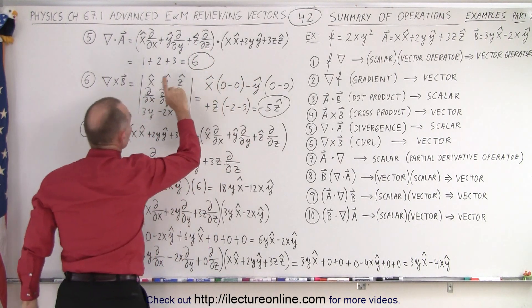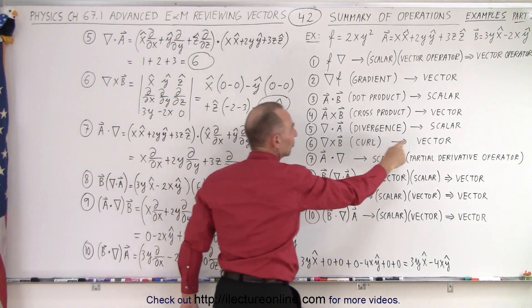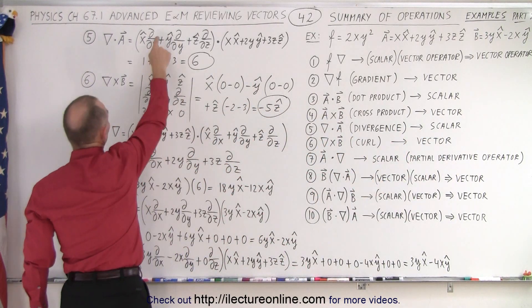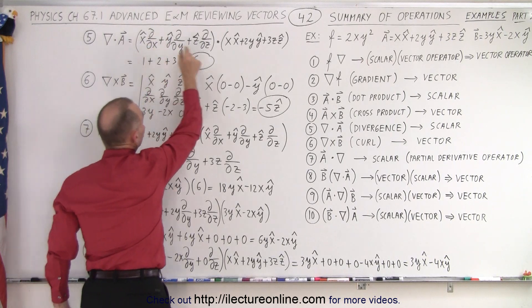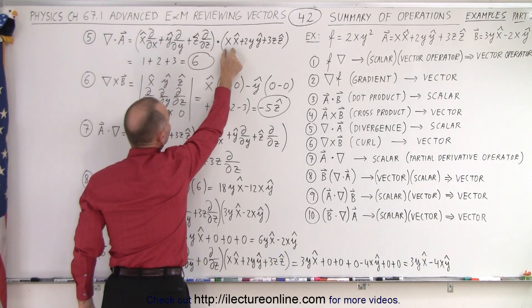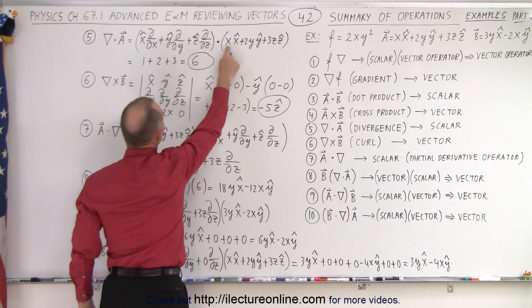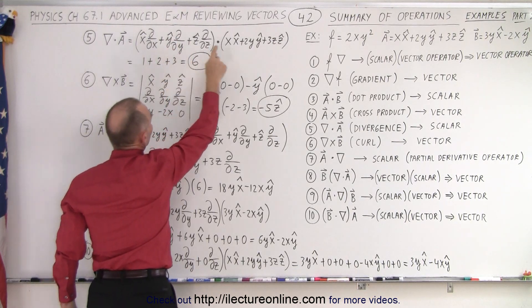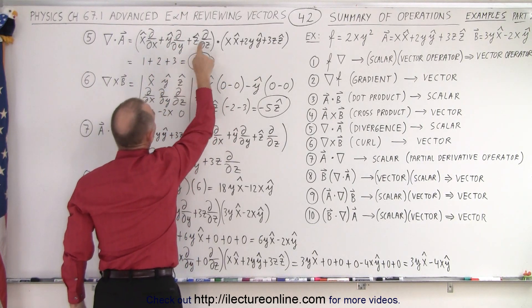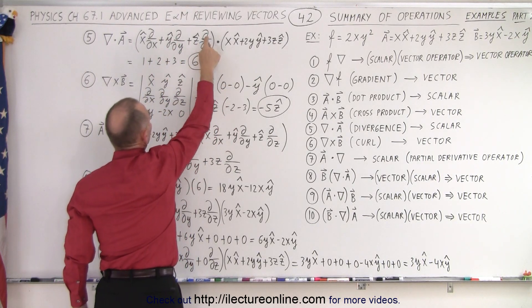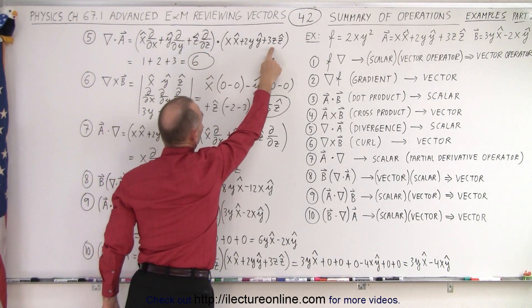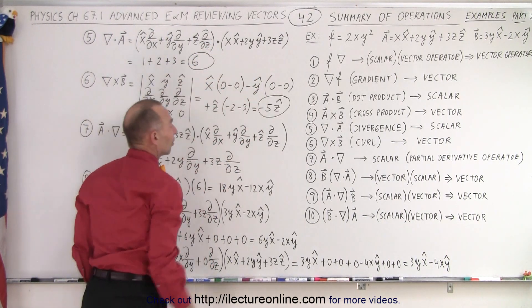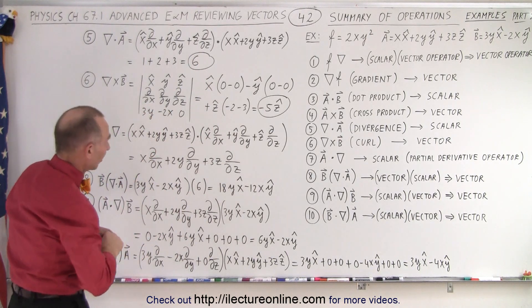Remember that we're going to end up with a scalar quantity, because what we do is take the partial derivative with respect to x and operate on the x component — that equals 1. The partial derivative with respect to y on the y component equals 2. And the partial derivative with respect to z on the third component, 3z, gives us 3. Adding them together results in a scalar quantity equal to 6.